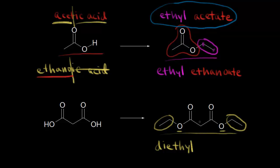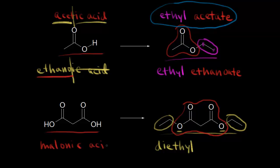To finish naming our ester, let's think about the carboxylic acid portion. This was derived from a dicarboxylic acid. The IUPAC name would be propanedioic acid; the common name would be malonic acid. To finish the name, we drop the IC and the acid and add -ate, giving us malonate. So this ester would be diethyl malonate.